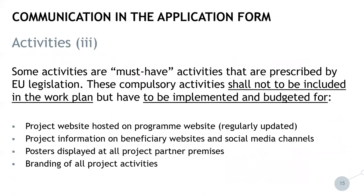Last but not least, there is the special case of certain must-have activities, which are further described in the program manual in chapter 3.1.3. These must-have activities are prescribed by EU legislation and shall not be included in the work plan, but they have to be implemented and budgeted for. These activities are: the project website hosted on the program website, which has to be regularly updated; project information on beneficiary websites and social media channels, where you will have to mention and introduce the project; posters at all project partner premises; and branding of all your project activities.